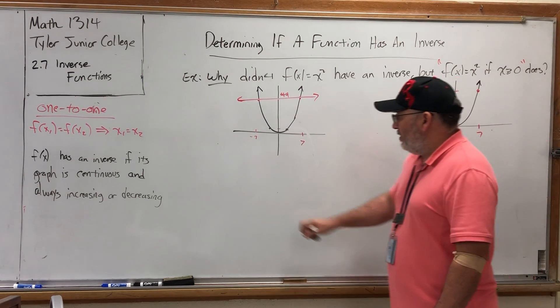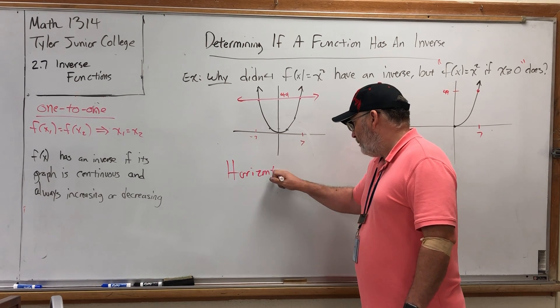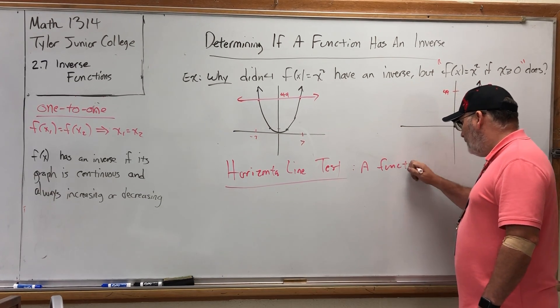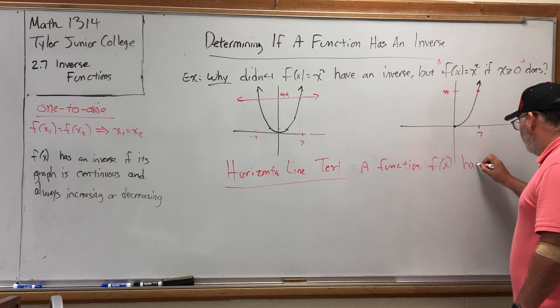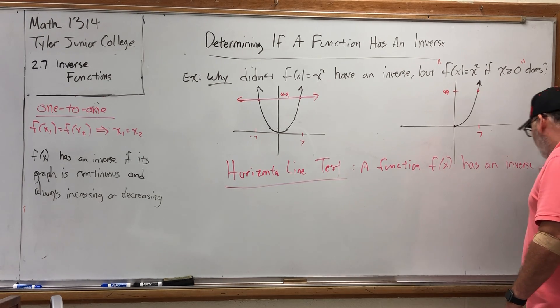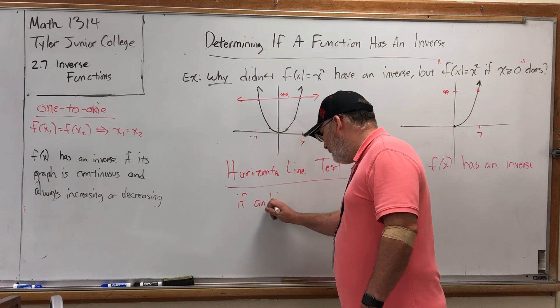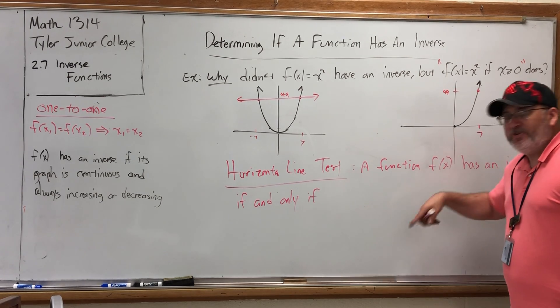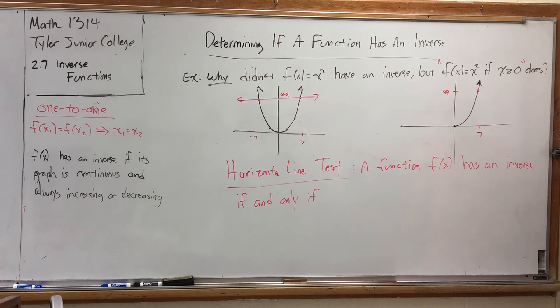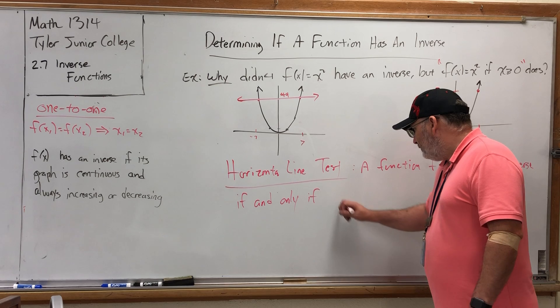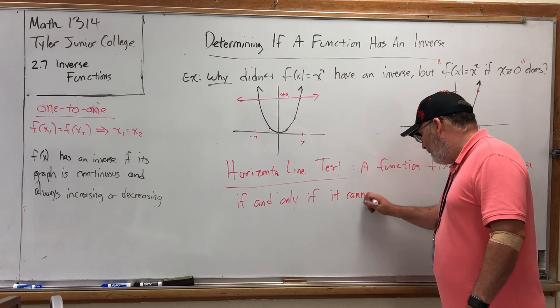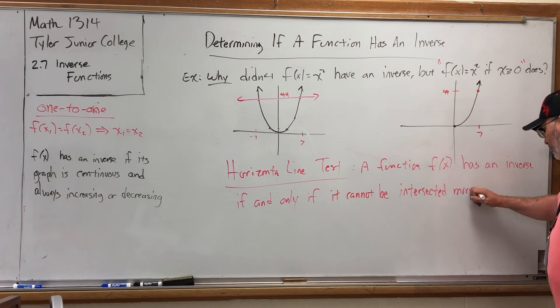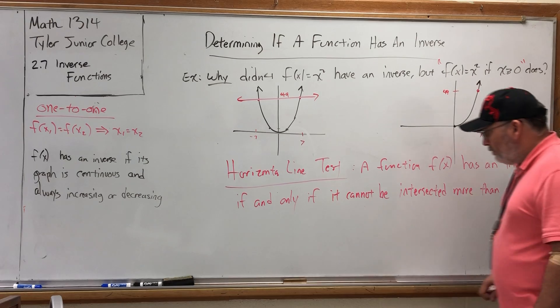Because the easiest way is to look at the graph and realize that if you have two points with the same y value but different x values, then they can be joined by a horizontal line. The third way is called the horizontal line test. And the horizontal line test goes something like this. A function f of x has an inverse if and only if it cannot be intersected more than once by any horizontal line.